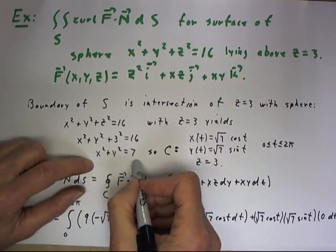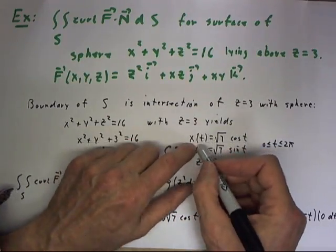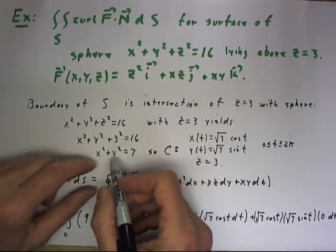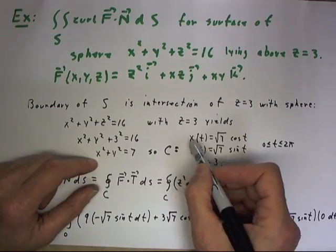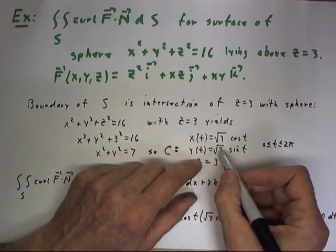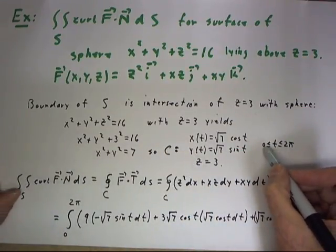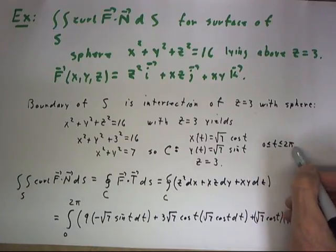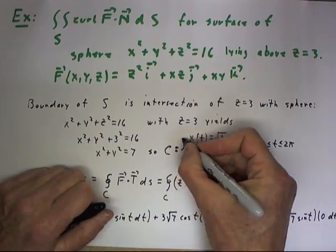So our boundary curve is x of t equals, well, x and y form a circle of radius square root of 7, so we can parameterize that by x(t) equals square root of 7 cosine t, y(t) equals square root of 7 sine t, with t going from 0 to 2 pi, and z equals 3.